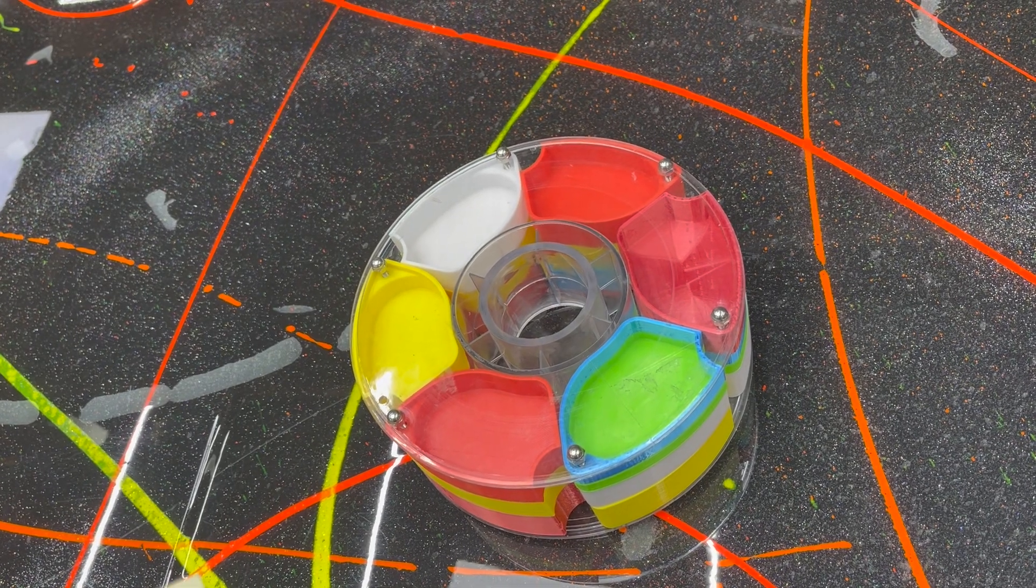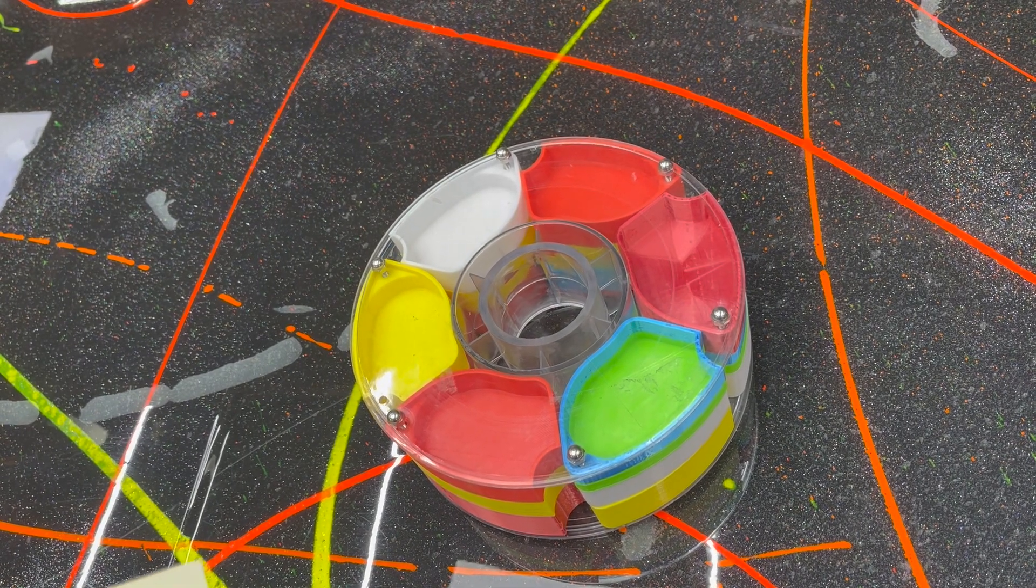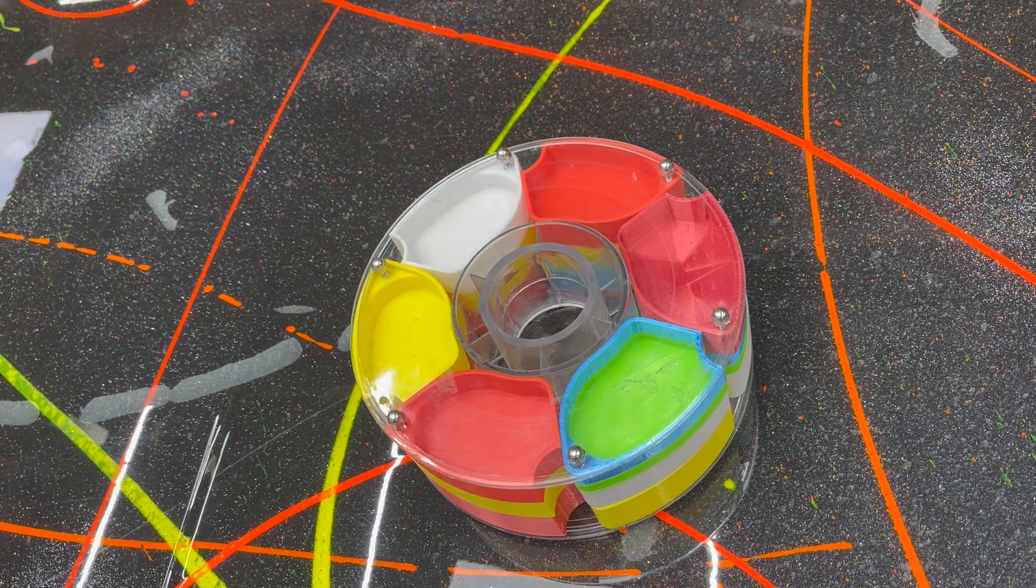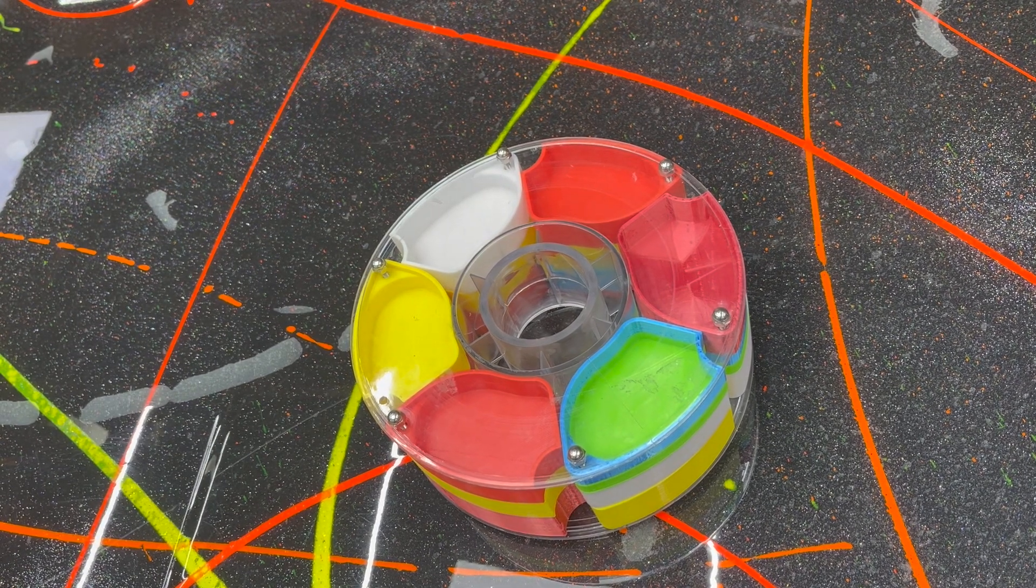This right here is the filament spools screw box by 123MU, otherwise known as Zang Mushing.